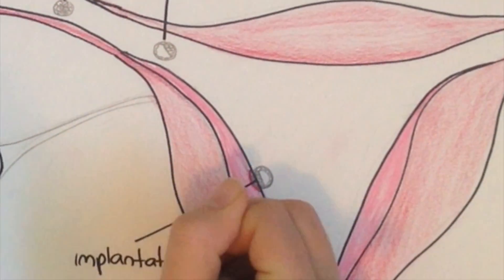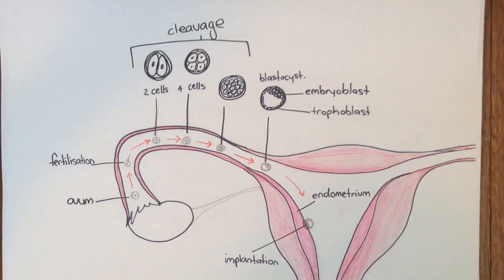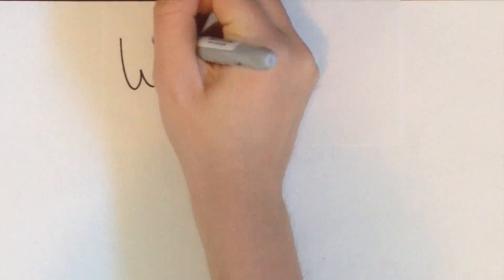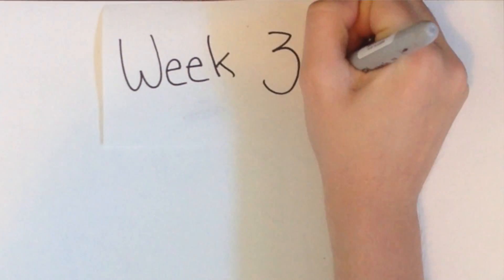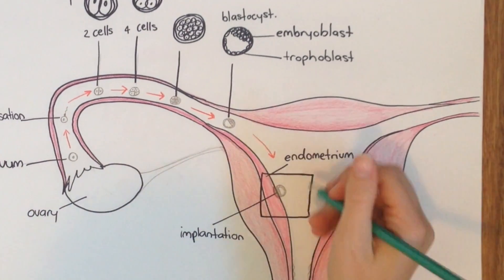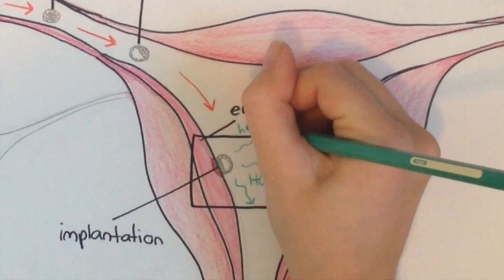It takes around six days for the blastocyst to make its way into the uterine cavity and loosely attach itself into the endometrium. By week three, the blastocyst is now nestled in the nutrient-rich lining of the endometrium and has begun to produce the pregnancy hormone HCG, which tells your ovaries to stop releasing eggs.